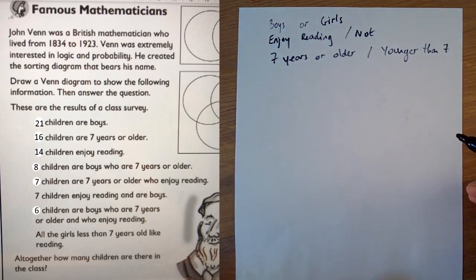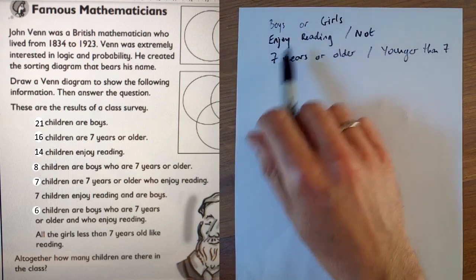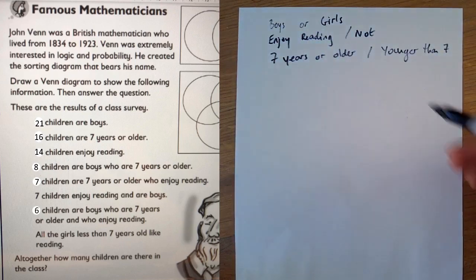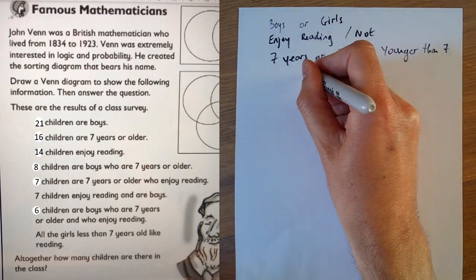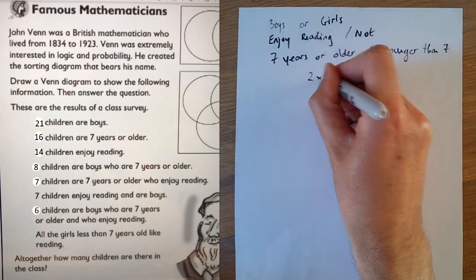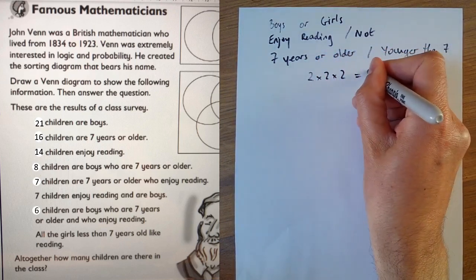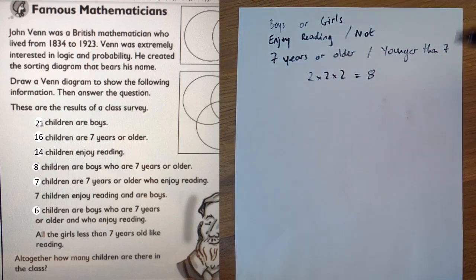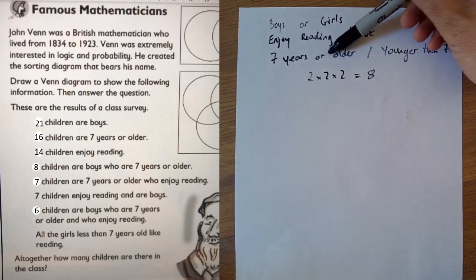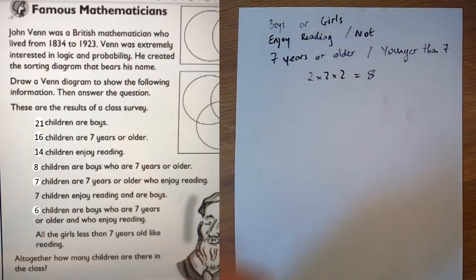Now if you think about all the different types of people you could be, it could be this or this, this or this, this or this. You've got two options for each of these things. You don't need to understand really what I'm about to show you, but that would mean that there are two times two times two. There are eight different categories you could be in. You could be a boy who doesn't enjoy reading who's seven years or older. That's one of the eight.